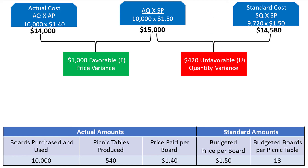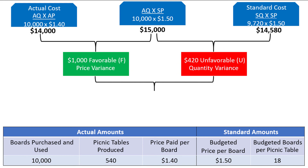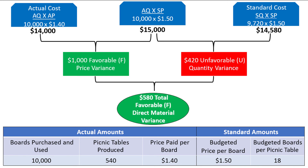Finally, we can calculate the total direct materials variance by subtracting the price and quantity variances. We subtract them because one is favorable and the other is unfavorable; otherwise we would add them together. $1,000 minus $420 equals a $580 total direct material variance, which is favorable. When one variance is favorable and the other is unfavorable, the total variance has the same label as the larger variance — in this case the $1,000 favorable price variance.